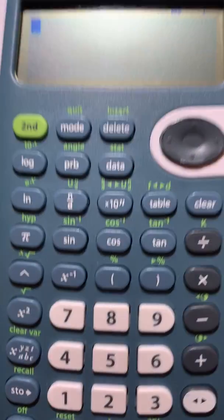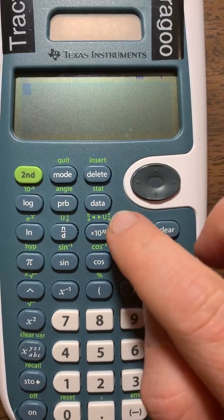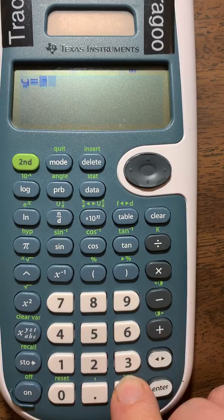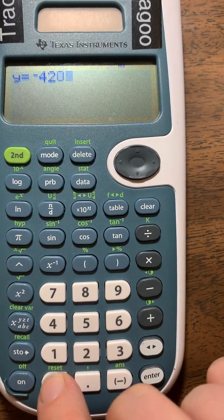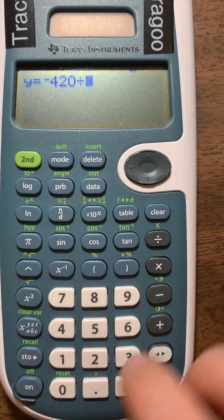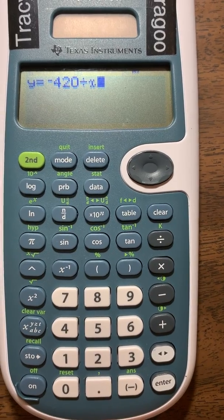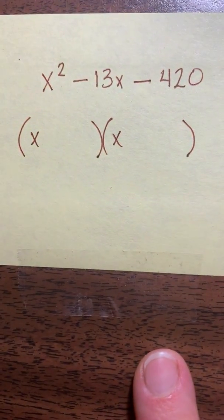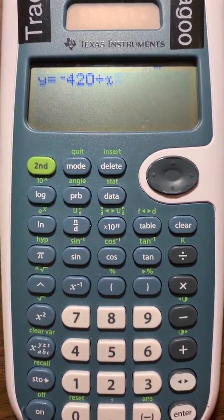We're going to come over to the calculator and push the table button, and you get a y equals screen. You want to put that negative 420 in and divide by x. So you're dividing negative 420 by x to see what these two factors might be.